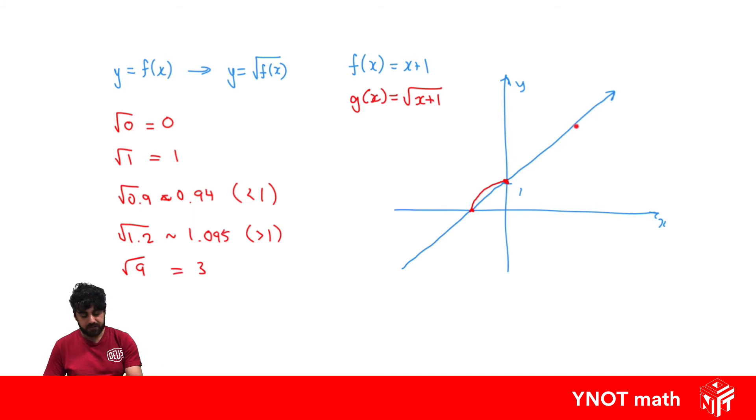And then all of these values are greater than 1, and we know for values greater than 1, the square root function has values less than those values. So we're expecting the graph to do something like that, and that ends up being the sketch of the square root of x plus 1.